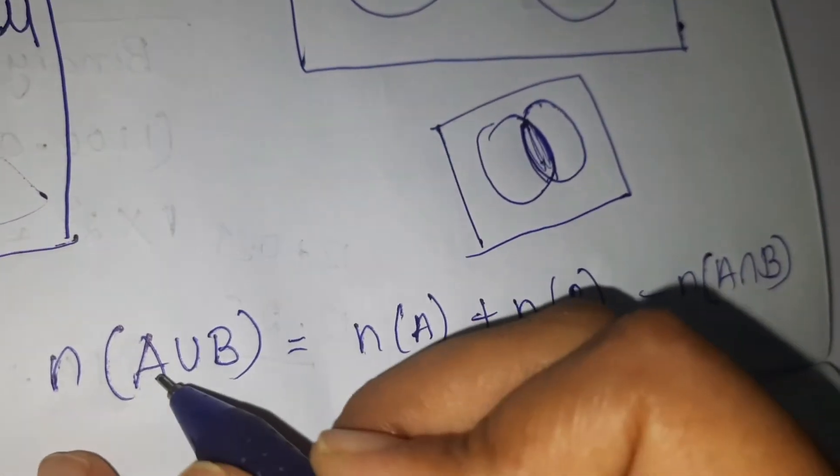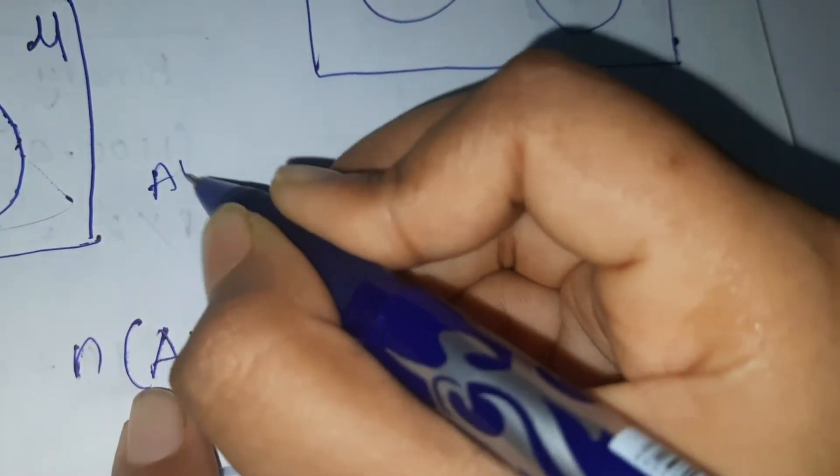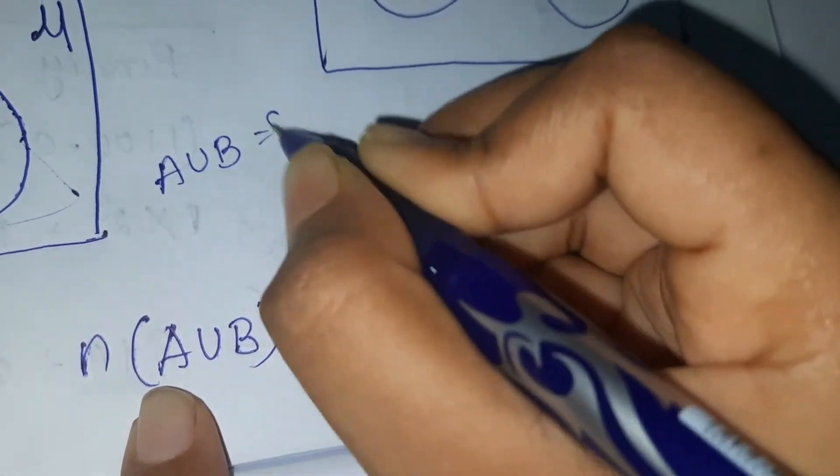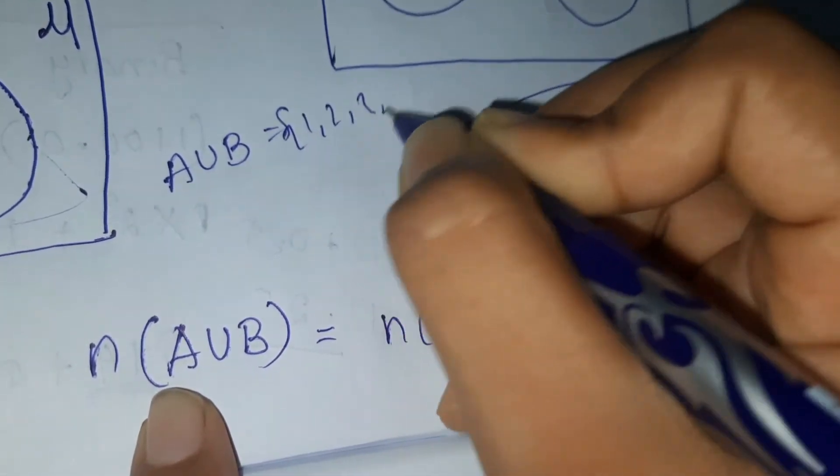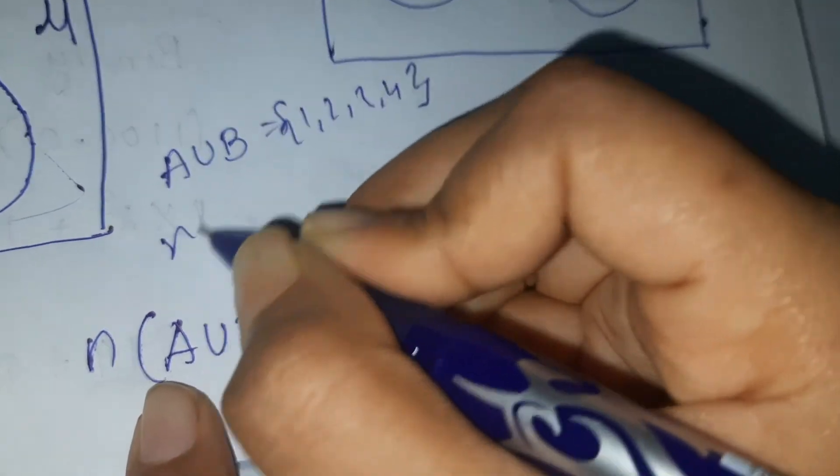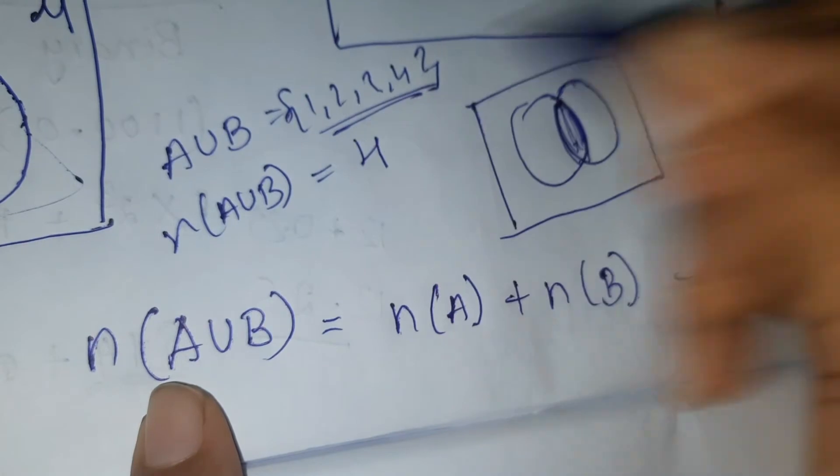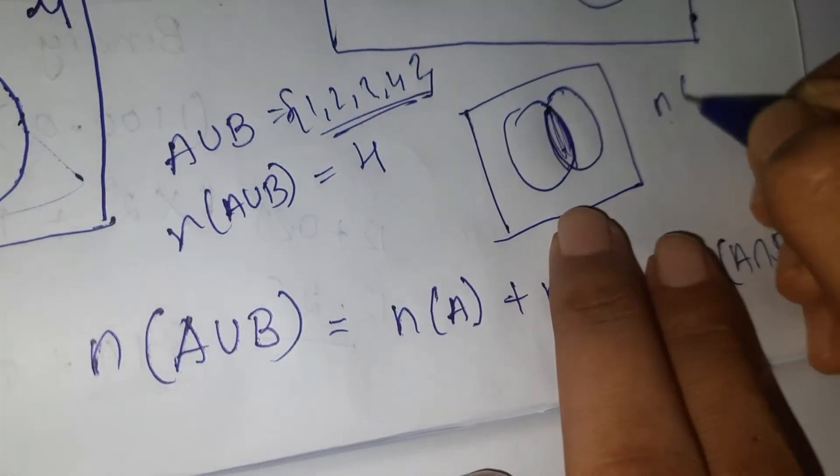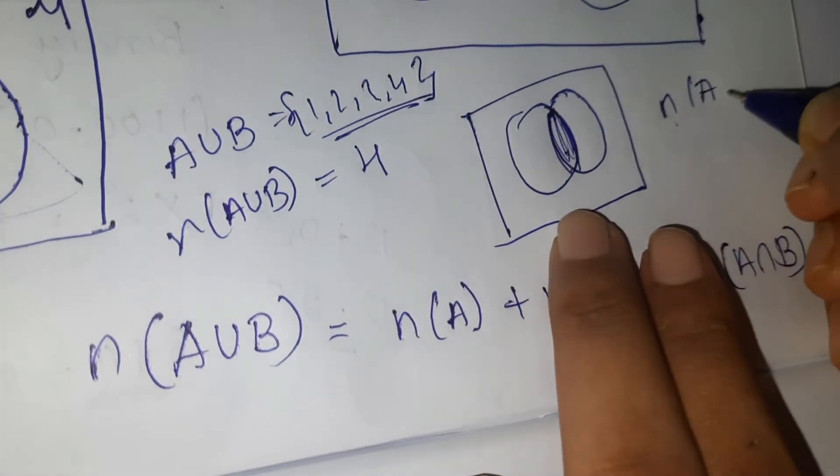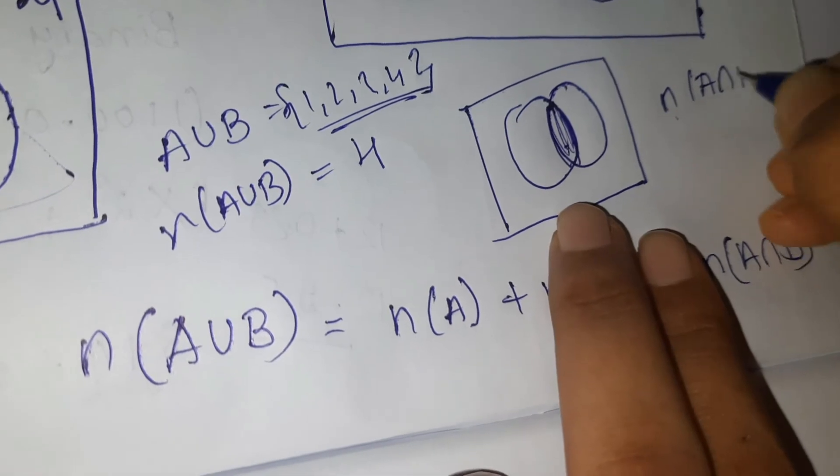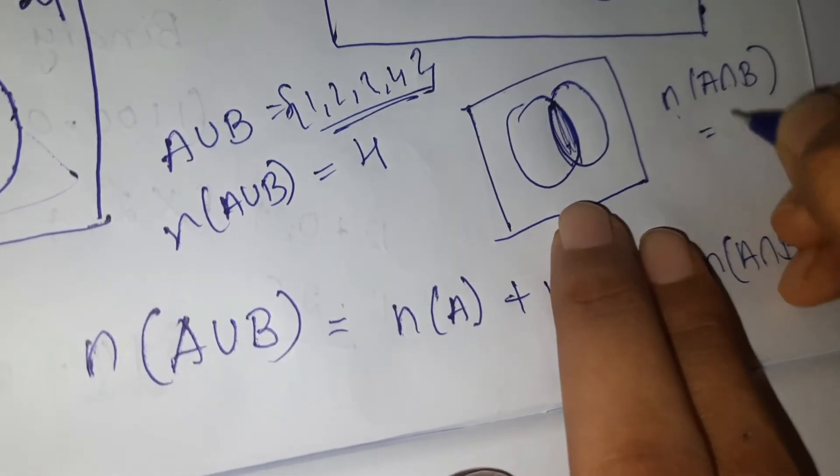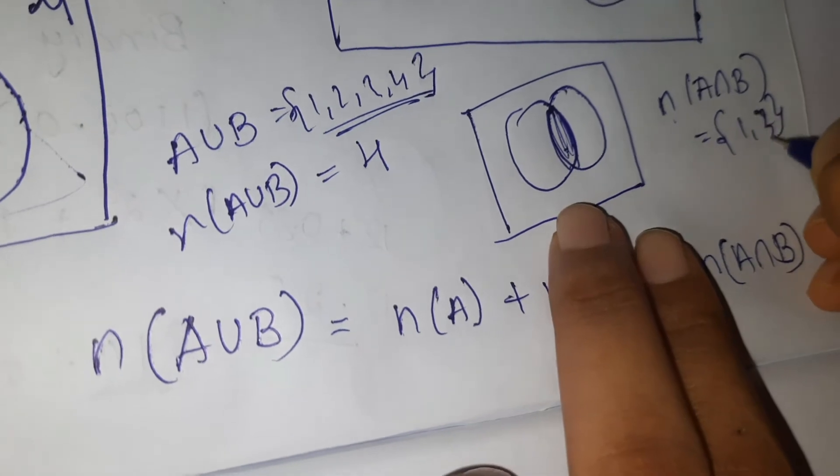If they give union—suppose A union B—this is A union B. We have certain elements: 1, 2, 3, 4. So n of A union B means number of elements. We have four elements in this. Suppose we have n of A intersection B like {1, 2}. So we have {1, 3}, and the number of elements is two.